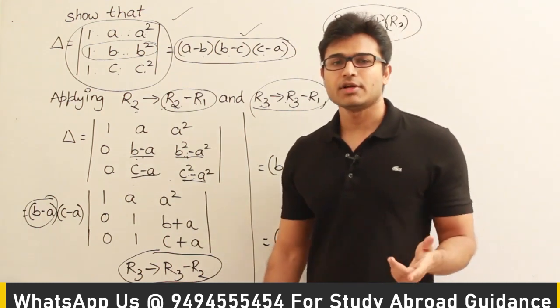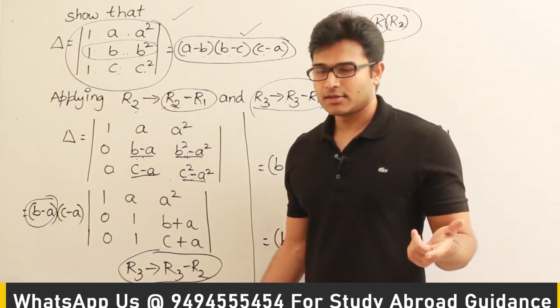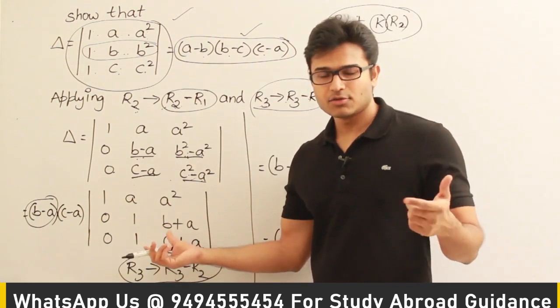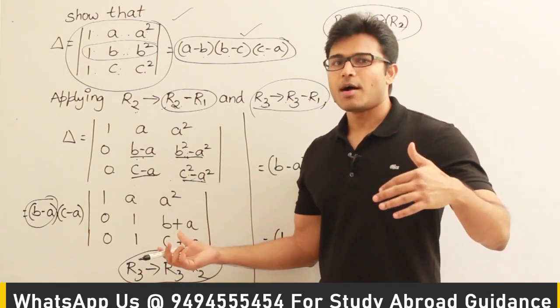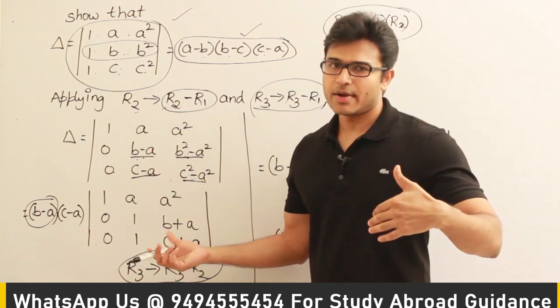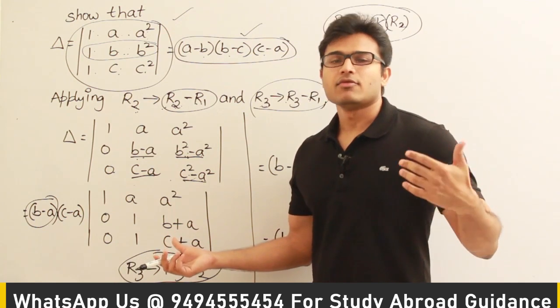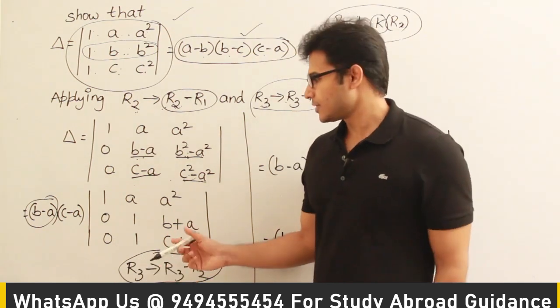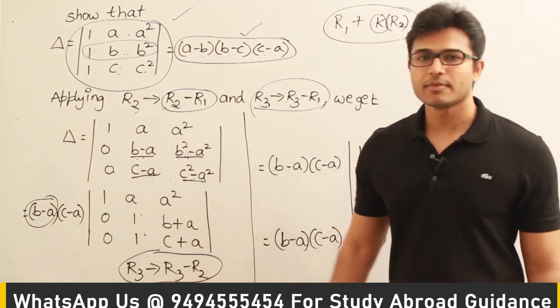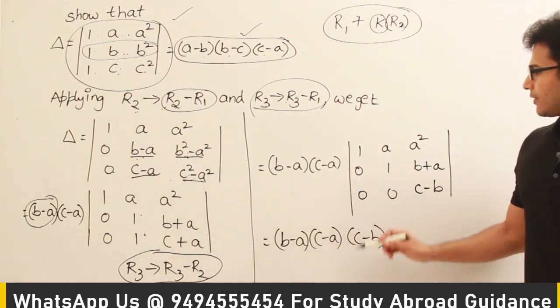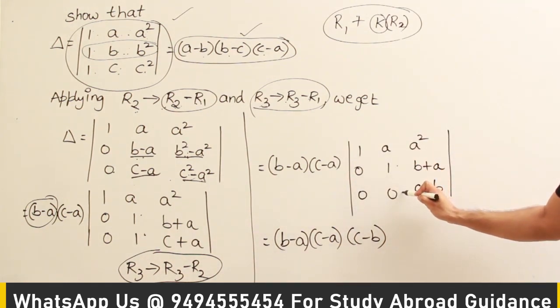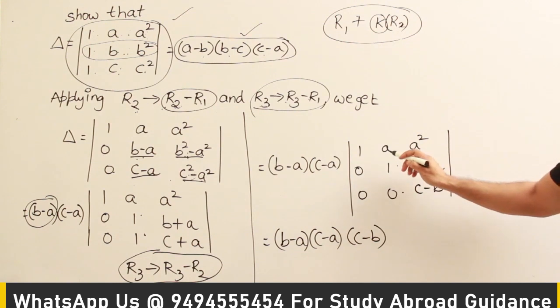And finally I can do R3 equal to R3 minus R2. Why am I doing this? If you observe this, I'm trying to convert the entire determinant or the matrix into a form of upper triangular or lower triangular matrix so that the determinant finding will be easy. So R3 equal to R3 minus R2, then what did we get? R3 equal to R3 minus R2, then I got this.